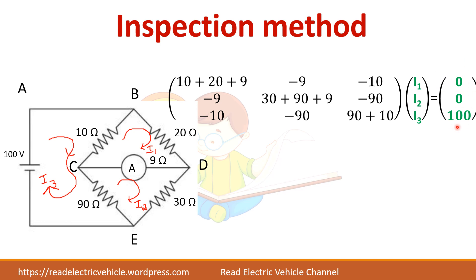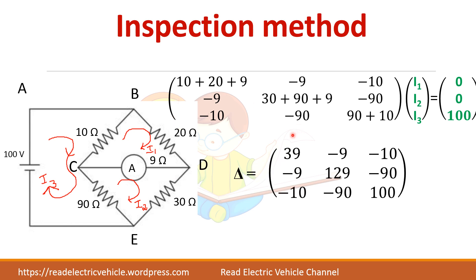Now write the voltage vector. The first loop has no voltage source, so it is 0. The second loop has no voltage source, so it is 0. The third loop has 100 V; since I3 flows from negative to positive terminal, it is a rise in potential, so take it as plus 100.